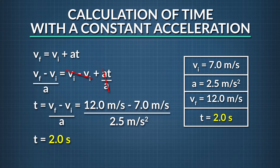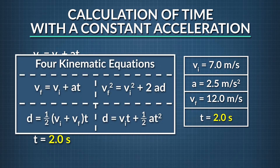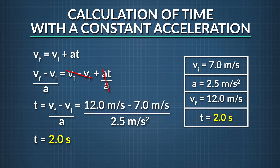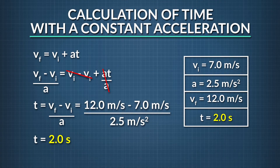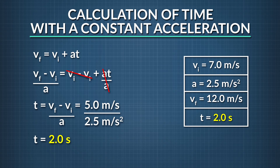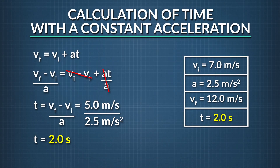Now that we know we need to solve for time, and we were given both initial and final velocity as well as acceleration, the kinematic equation to use would be: final velocity equals initial velocity plus the product of acceleration and time. If we rearrange that equation for time by first subtracting initial velocity from both sides, then dividing both sides by the acceleration, we have time isolated. Plugging in our values, the difference in final and initial velocity is 12.0 minus 7.0, which is 5.0 meters per second. Dividing that by the acceleration of 2.5 meters per second squared gives us the time: 2.0 seconds.